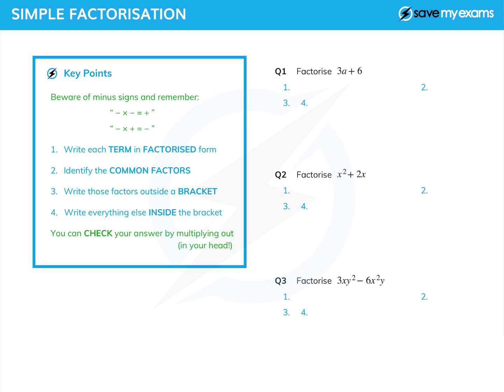For question 1, the first thing we're going to do is write 3a as 3 times a, and we're going to write 6 as 3 times 2. That allows us now to go on to step 2 and say, oh look, there are some common factors, or at least one common factor, and that's the 3. So step 2, the common factor is 3.